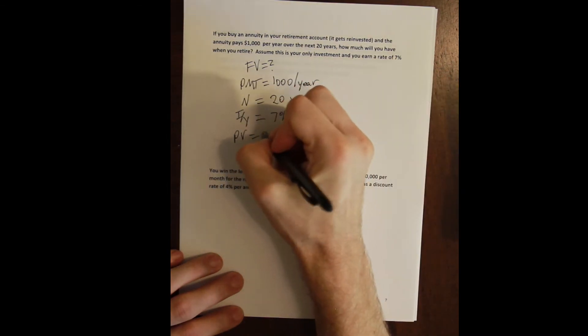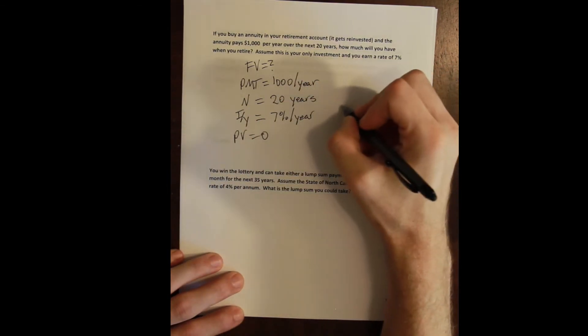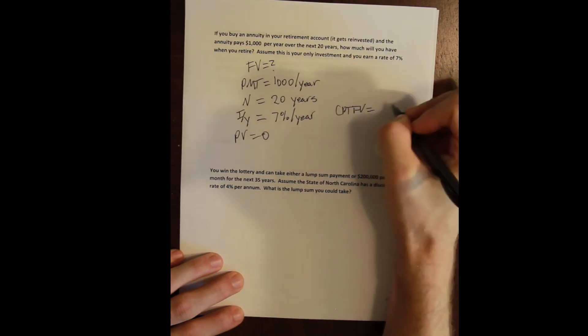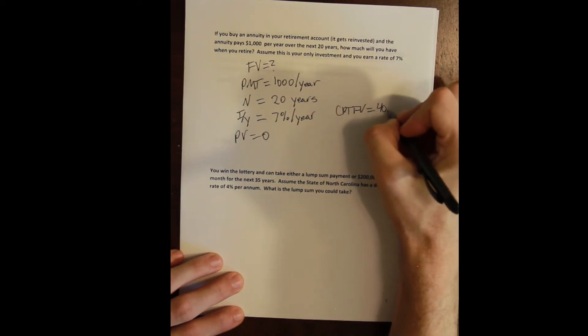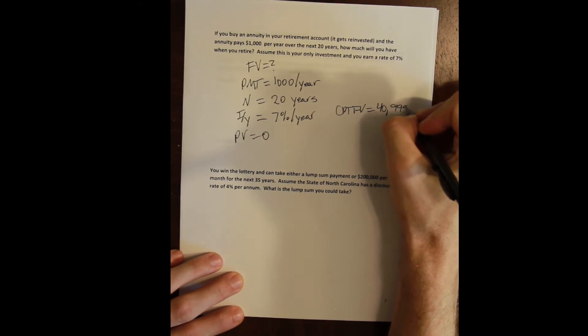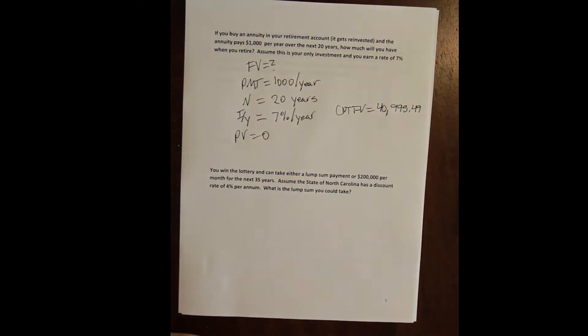We don't have any present value, we don't start with any money. We compute the future value, which is how much we'll have at the end, and we get $40,995.49.